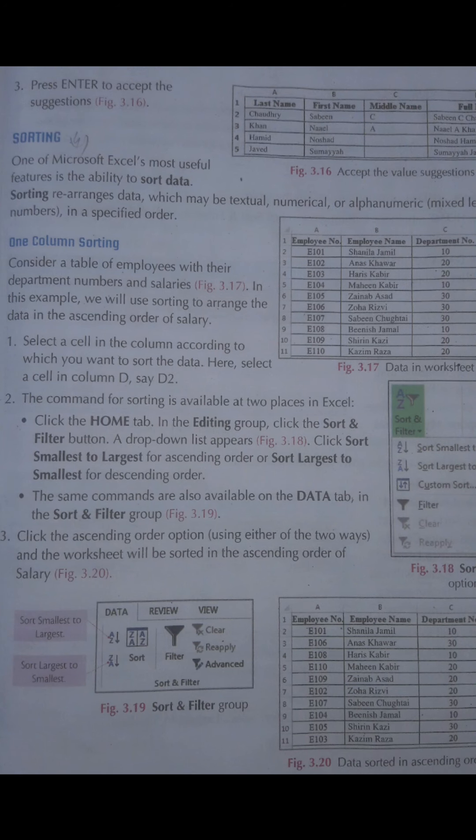Book page number 33 — آج کا ہمارا lecture ہے sorting. Sorting کا مطلب ہے rearrange کرنا۔ Rearrange means کہ جو ہم نے data اپنی Excel کی sheet کے اندر add کیا ہوتا ہے وہ actual data change نہیں ہوتا لیکن اس کی ترتیب change ہو جاتی ہے۔ اس process کو ہم کہتے ہیں sorting.